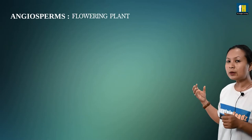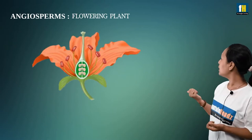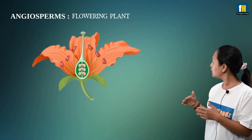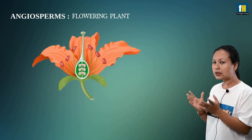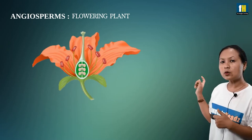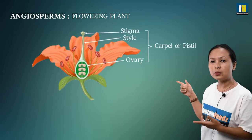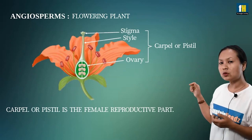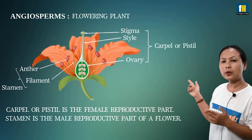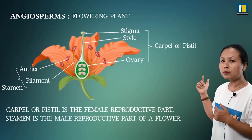Coming to the flowering plant structure — the flower is a reproductive structure. The carpel, also known as the pistil, is the female reproductive organ of the flower. It forms the central part of the flower and is the female reproductive part.